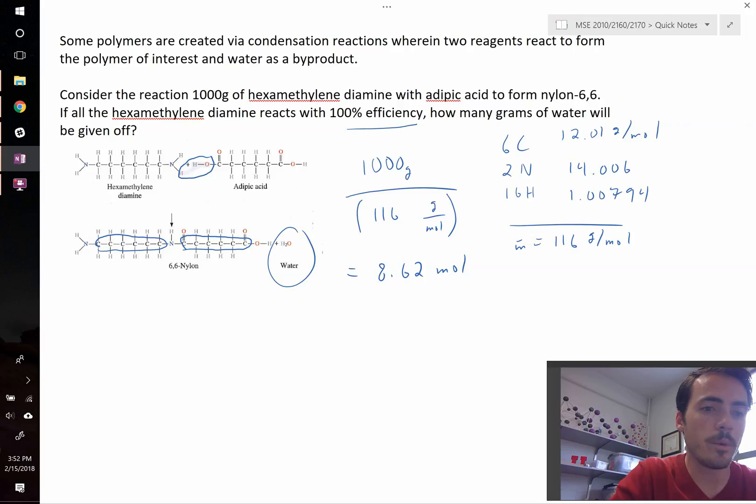That's easy enough to do. We can just write that 8.62 moles is going to be multiplied by the molecular weight of water. Water is easier.